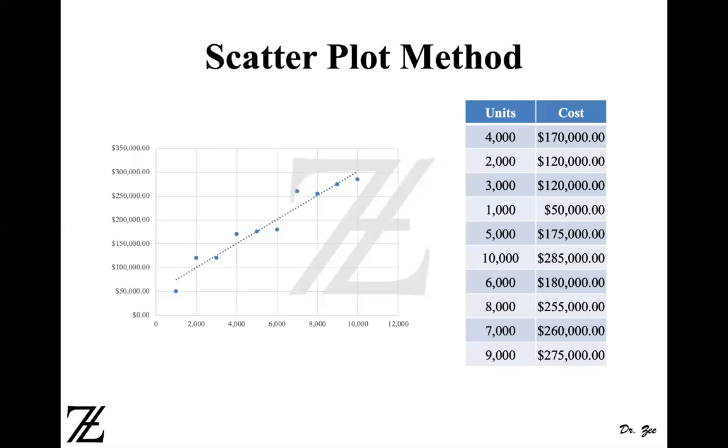The next method is the scatter plot method. In a scatter plot method, we analyze the data from past and we try to find out the trend of the data. And then, based on that, we estimate the cost for the future. So if you can see here on the right-hand side, data points are given here. The activity level, 4,000, 2,000, 3,000. So they are not arranged in order. And then, their respective costs of producing 4,000, 2,000, 3,000, and so on and so forth units. This is provided. So we plot that data.